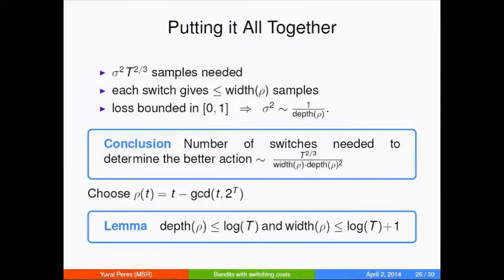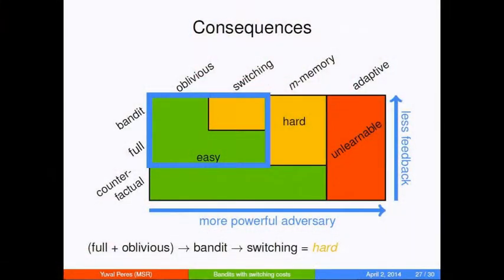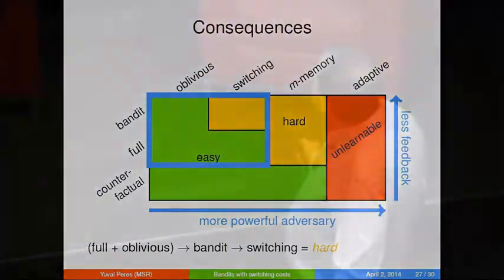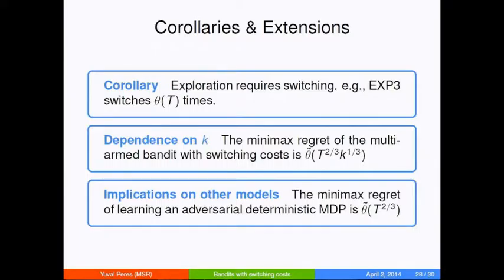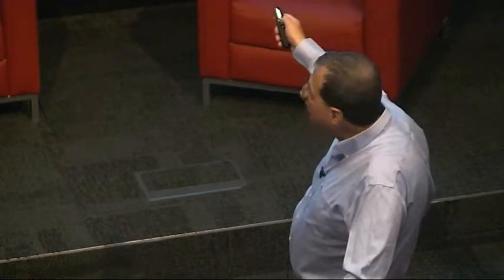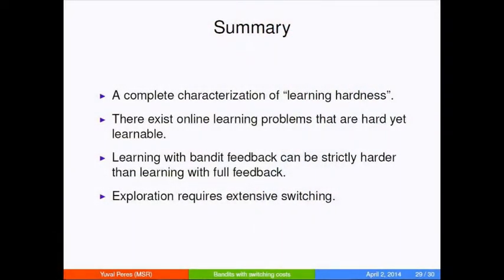This function has both depth and width which are logarithmic. So bandit feedback combined with switching costs is hard in the sense of T^{2/3}. If you have more actions, the dependence is K^{1/3} on the number of arms. This paper will appear and is available on the archive if you want to see the actual details of the proof and the dependence on the number of arms. Thank you for your attention.